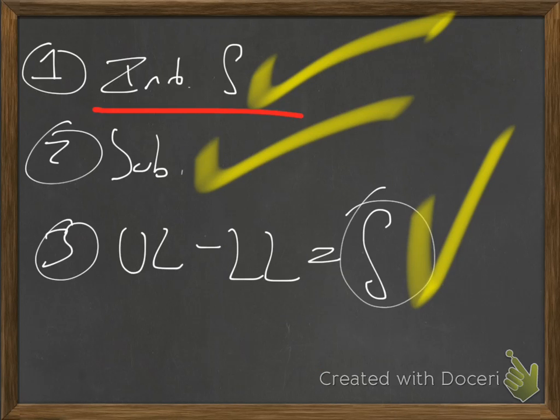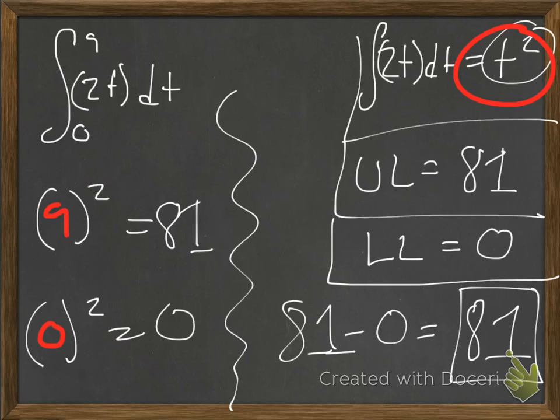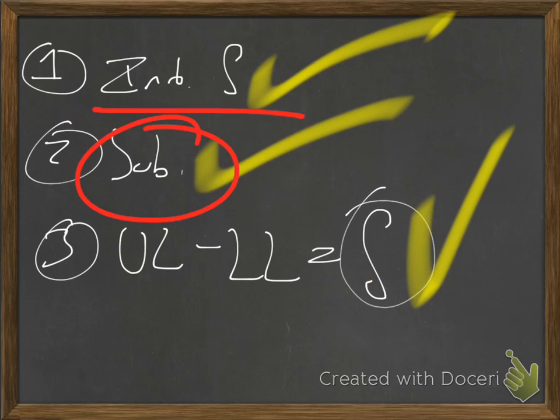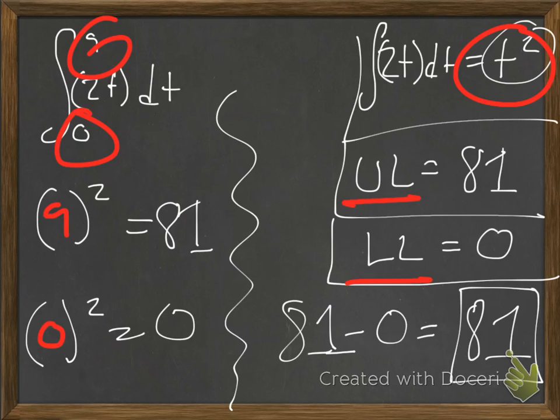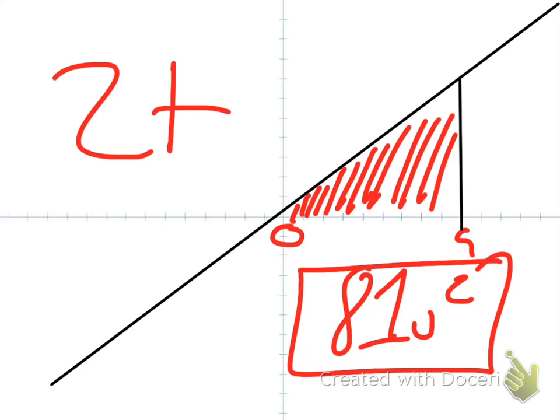What do we do? We took the indefinite integral, which was T squared. We substituted our values, our zero and our nine, to get our upper limit and lower limit of integration. Then we subtracted those things, 81 minus zero, to get 81, which told us how much space is in this graph. So we're done.